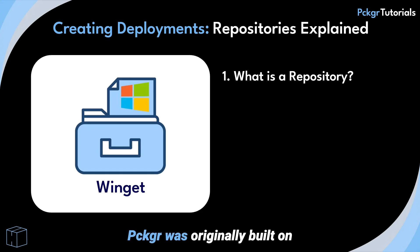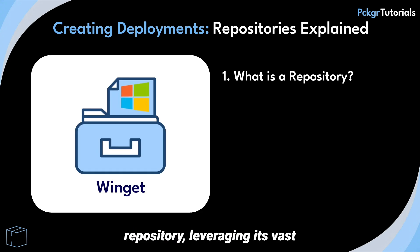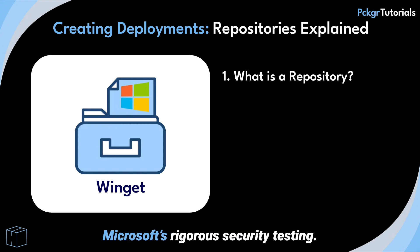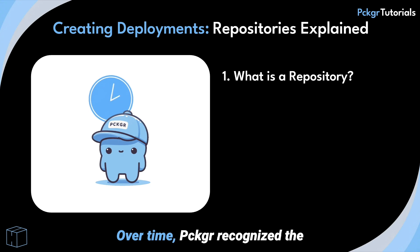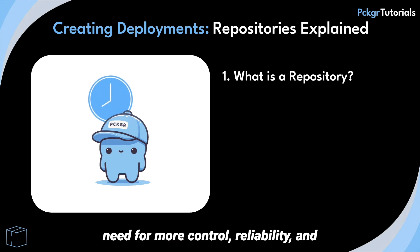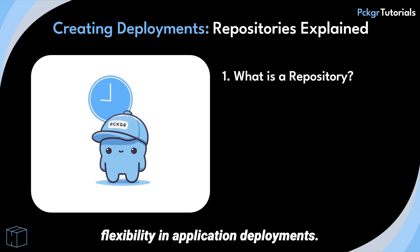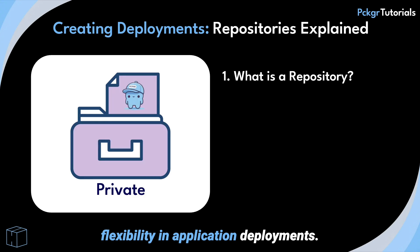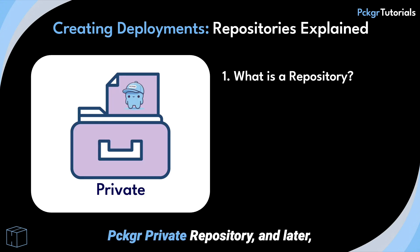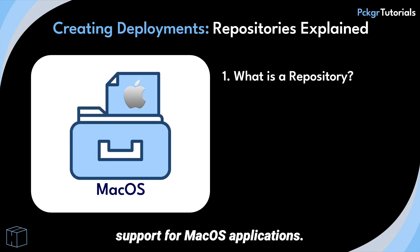Packager was originally built on top of Microsoft's public Winget repository, leveraging its vast selection of applications and Microsoft's rigorous security testing. Over time, Packager recognized the need for more control, reliability, and flexibility in application deployments. This led to the development of the Packager private repository and later support for macOS applications.